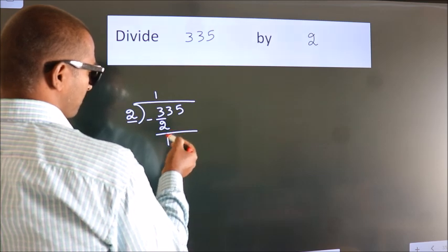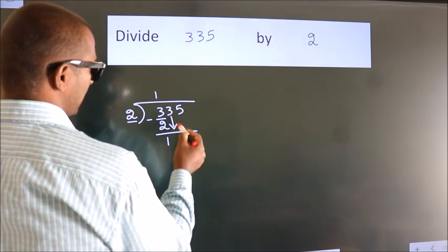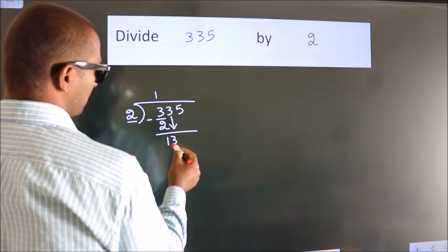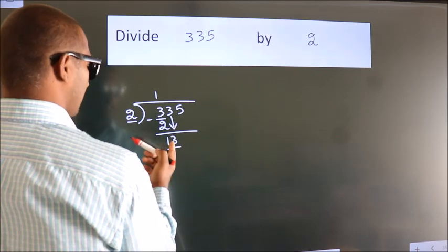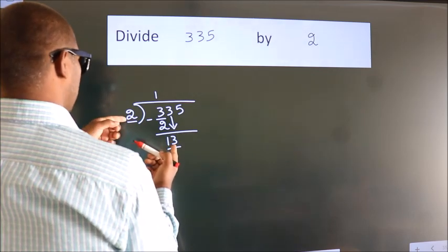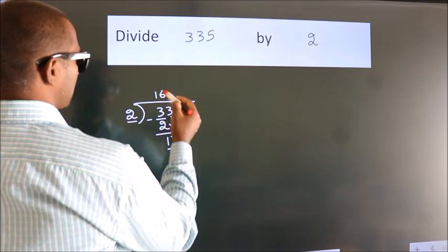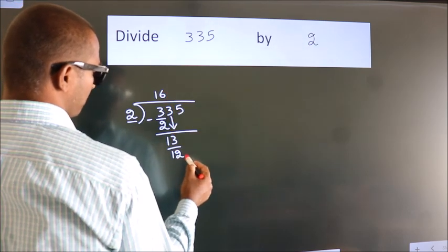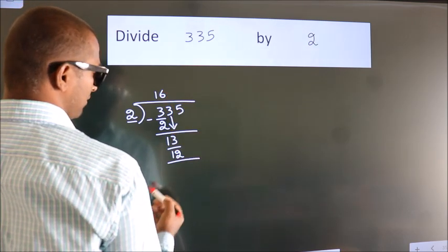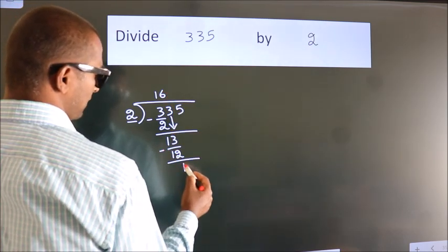After this, bring down the beside number. So 3 down. So 13. A number close to 13 in 2 table is 2 times 6 is 12. Now we subtract. We get 1.